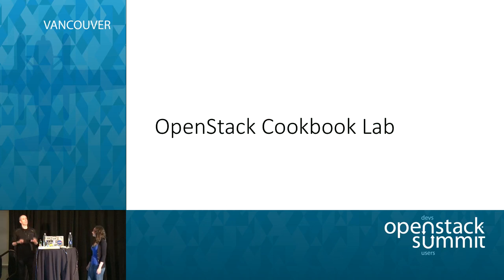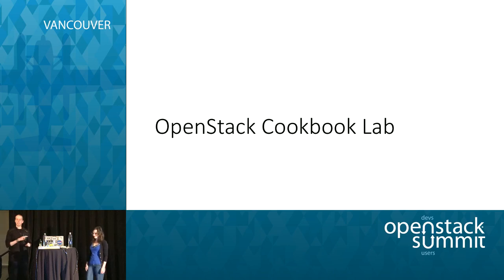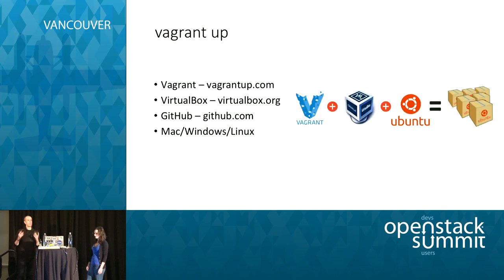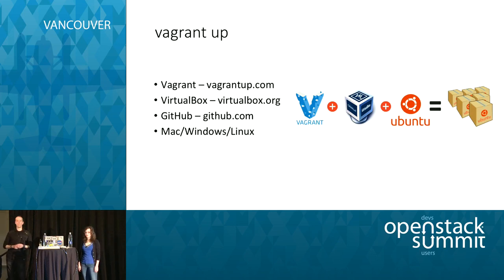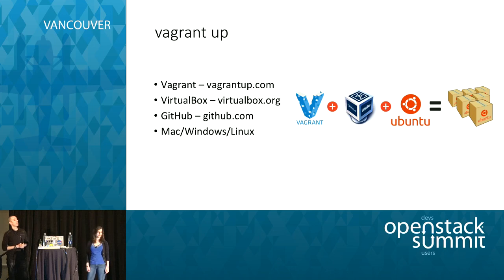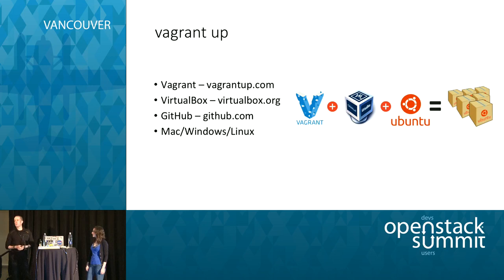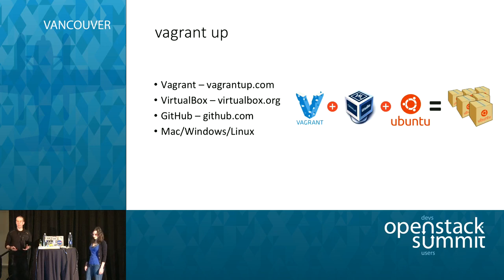Now let's talk about the lab itself. Because we've only got 40 minutes, we can't spin everything up live. If you want to run a good cookbook lab, you just need a couple of free simple tools. Who's using Vagrant today? Who's using VirtualBox as a local hypervisor? Who has a GitHub account? You don't have to be a GitHub contributor as a user — you can just pull the code off GitHub. It's freely available for the build of the lab itself, and we can run this on Mac, Windows, or Linux as a nested lab.